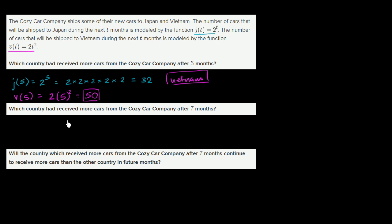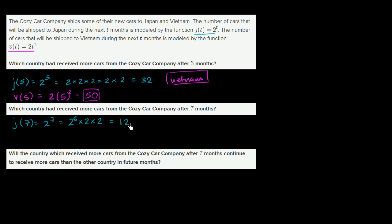Which country had received more cars after seven months? j(7) is equal to 2 to the seventh power. 2 to the fifth is 32, so we can view 2 to the seventh as 2 to the fifth times 2 times 2, which equals 32 times 4, which is 128 cars going to Japan after seven months.